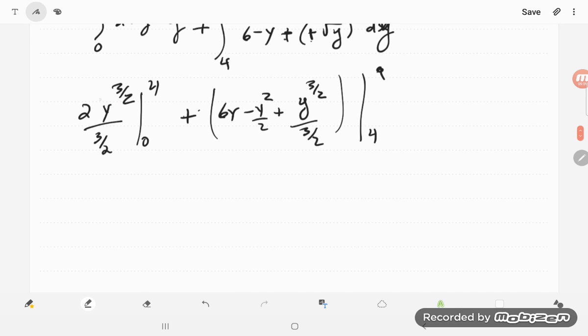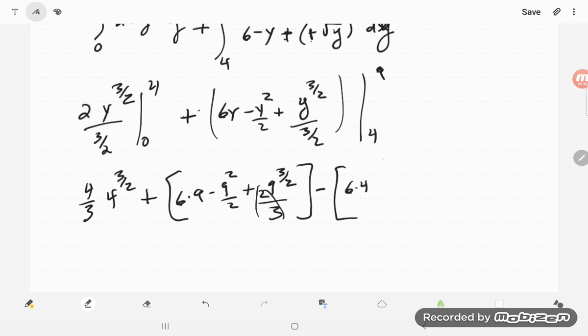Well, 0 is not a problem. We'll put in 4, so invert and multiply with the 3 halves, we'll get 4 thirds, 4 to the 3 halves, and then plus. We get our 9 first, so I get 6 times 9 minus 9 squared over 2 plus 9 to the 3 halves, well all times 2 thirds. So 2 thirds times that, and then minus 6 times 4 and a minus 4 squared over 2 and a plus 2 thirds, 4 to the 3 halves.